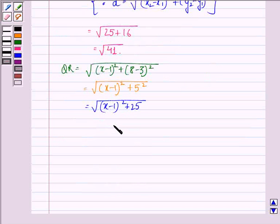But, it is given to us in the question that PQ is equal to QR. So square root of 41 equals square root of (x-1) the whole square plus 25.